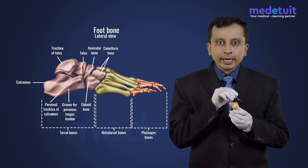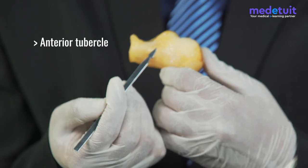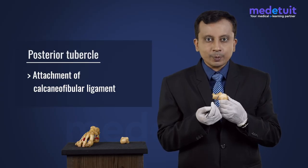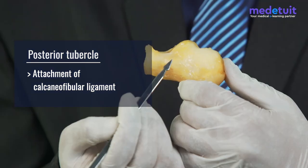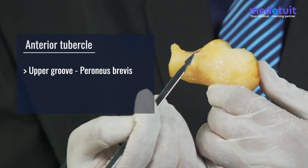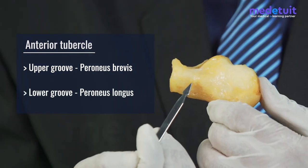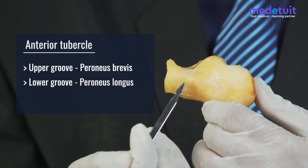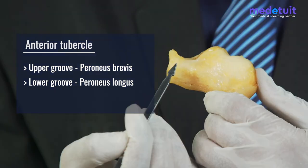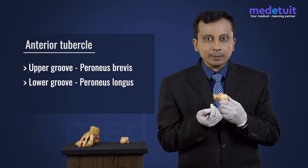The lateral surface of the calcaneum has two tubercles: an anterior tubercle and a posterior tubercle. The posterior tubercle gives attachment to the calcaneofibular ligament. Above the anterior tubercle there is a groove for peroneus brevis, and below it a groove for peroneus longus. The anterior tubercle itself gives rise to the peroneal retinaculum and is also called the peroneal trochlea.